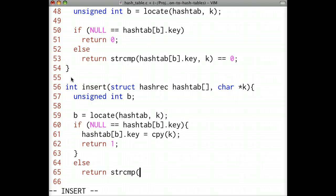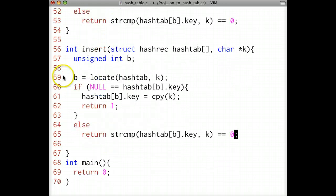If, however, the locate function doesn't return an empty bucket, we test to see if our target key was already inserted into the bucket. If so, we return one as if the key was just now inserted. Otherwise, if the locate function returns a bucket that doesn't match our target key, then the hash table is full and we return zero to signify that the insertion failed.